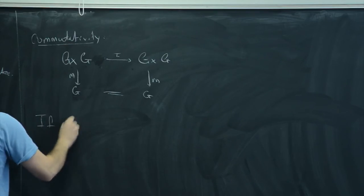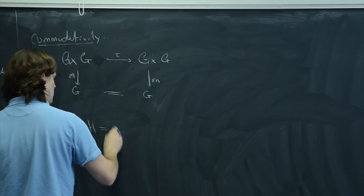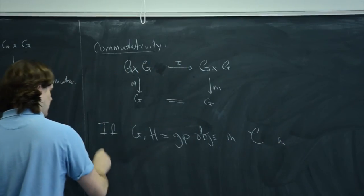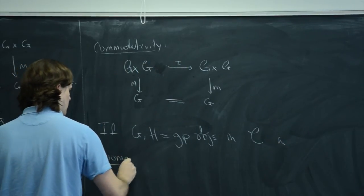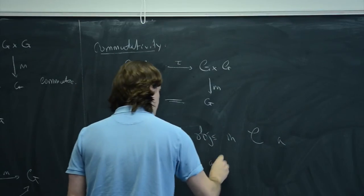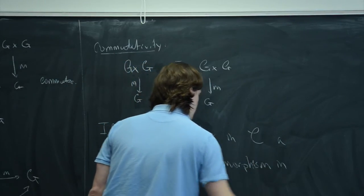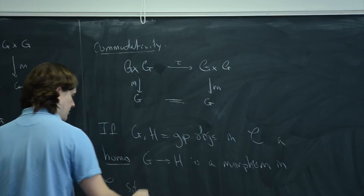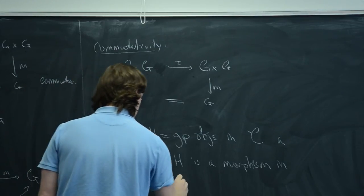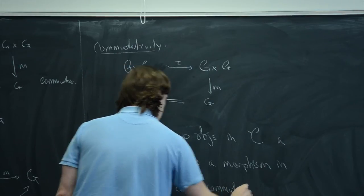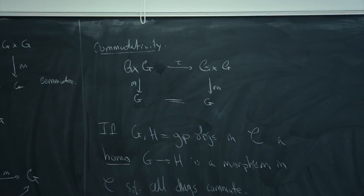If G and H are group objects in C, then a homomorphism from G to H is a morphism in C such that all the relevant diagrams commute. This implies that there's a category of group objects in C.